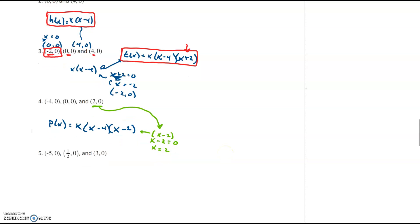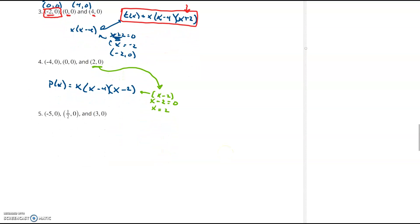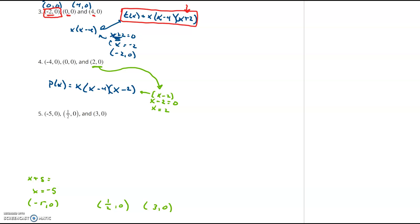For the last problem we have three zeros to handle. The x-intercepts are (-5, 0), (1/2, 0), and (3, 0). For the first one: x = -5 means the factor x plus 5 was set equal to zero, so the first factor is x plus 5.